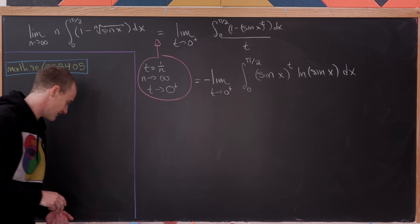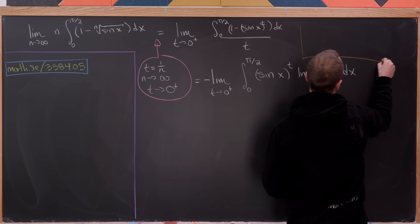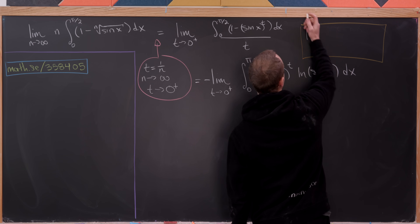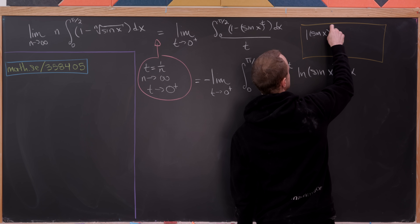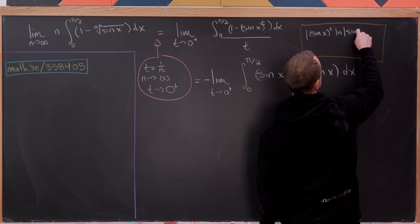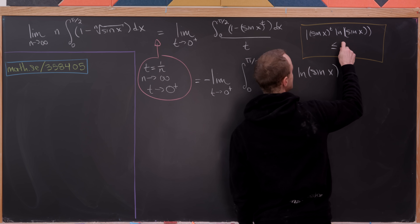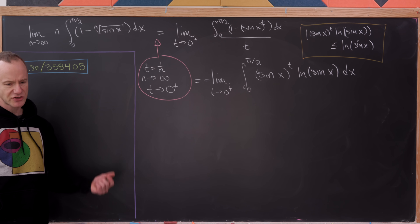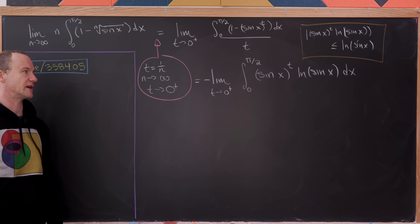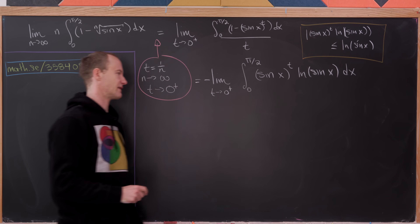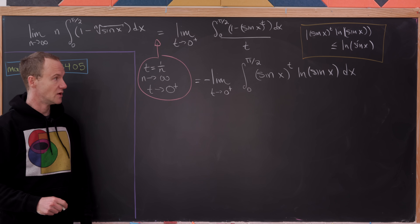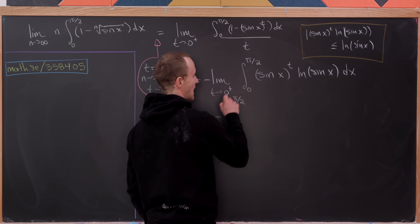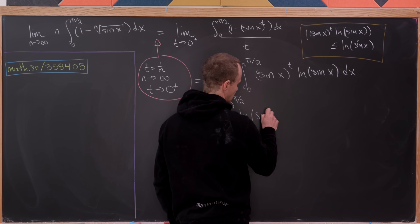We can bring the limit inside the integral by the dominated convergence theorem. The absolute value of our integrand — sin(x)^t times ln(sin x) — is less than or equal to |ln(sin x)| on this interval, and ln(sin x) is integrable, so we're allowed to bring the limit inside. Letting t approach 0 from above, the sin(x)^t term goes to 1, leaving us with negative the integral from 0 to π/2 of ln(sin x) dx.